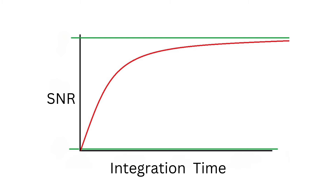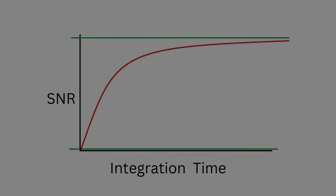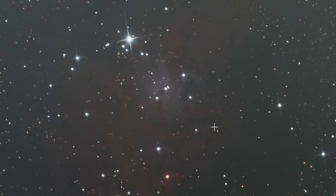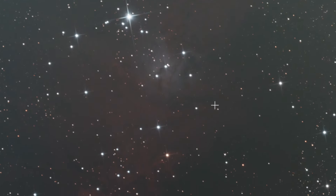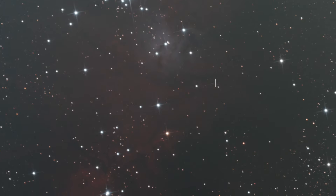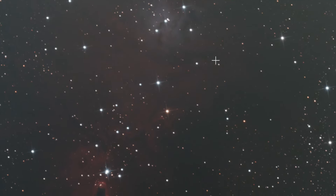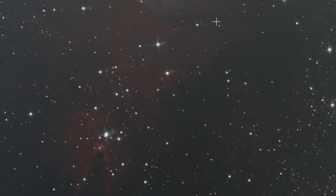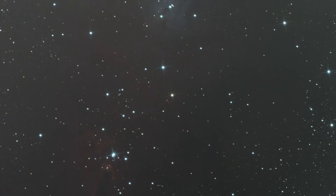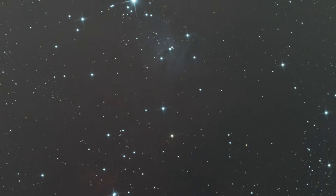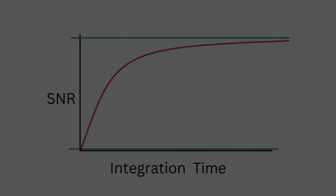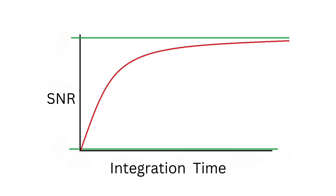The longer the integration time, the more light your sensor collects, resulting in a clearer and more detailed image. For example, an image with 15 hours of integration time will have less noise and more detail than the same image with just one hour of integration time.